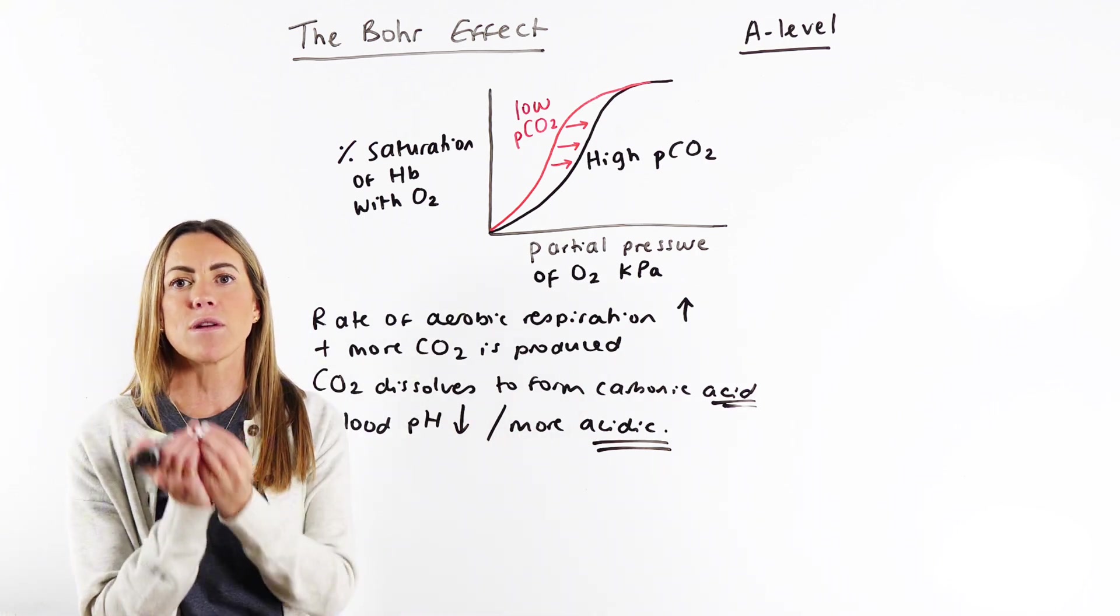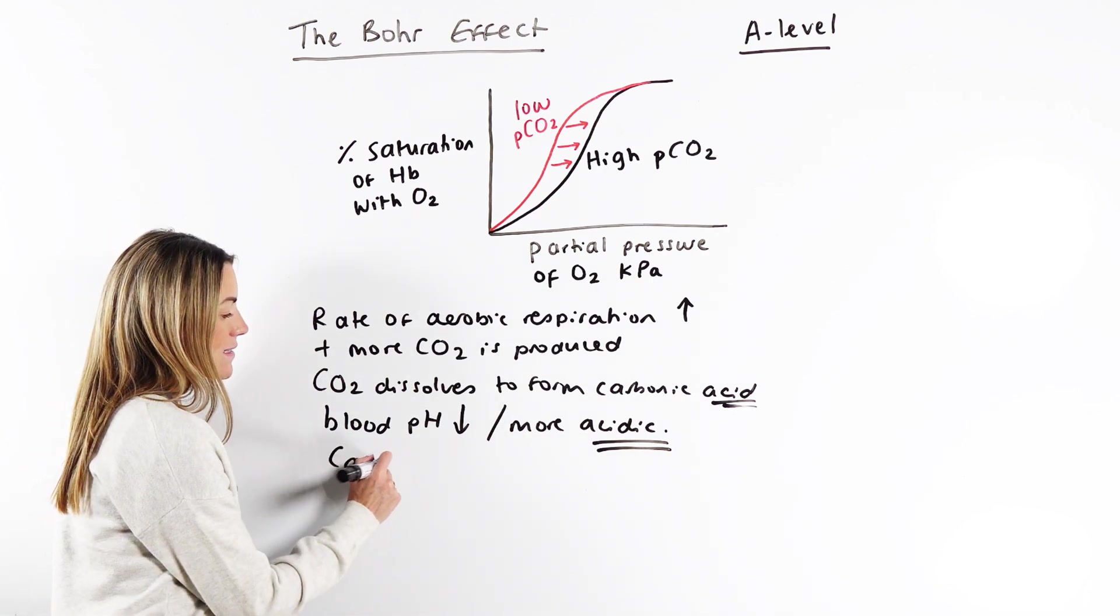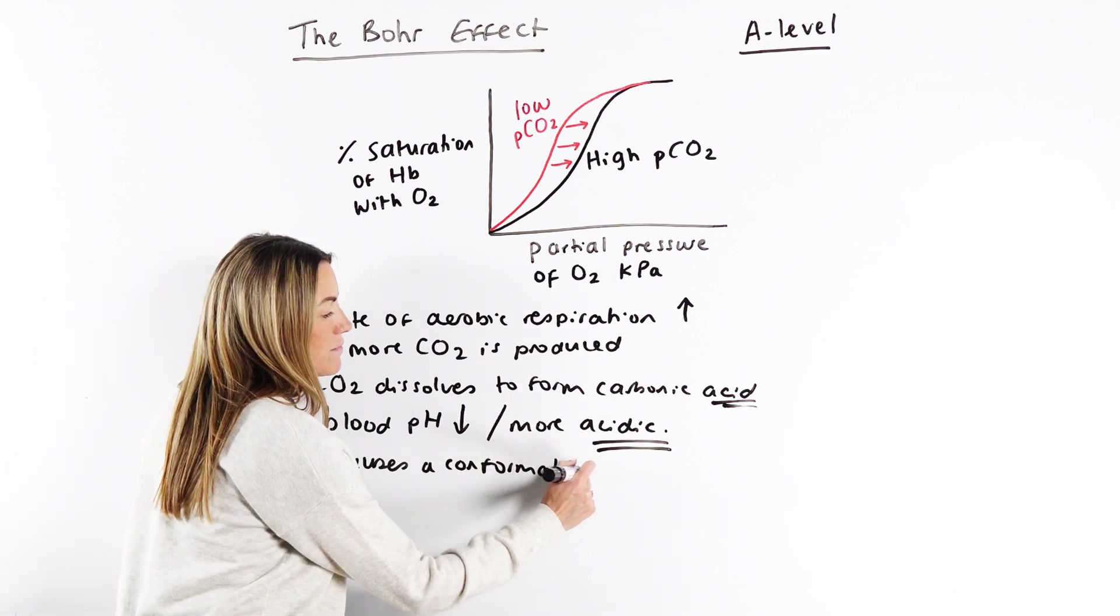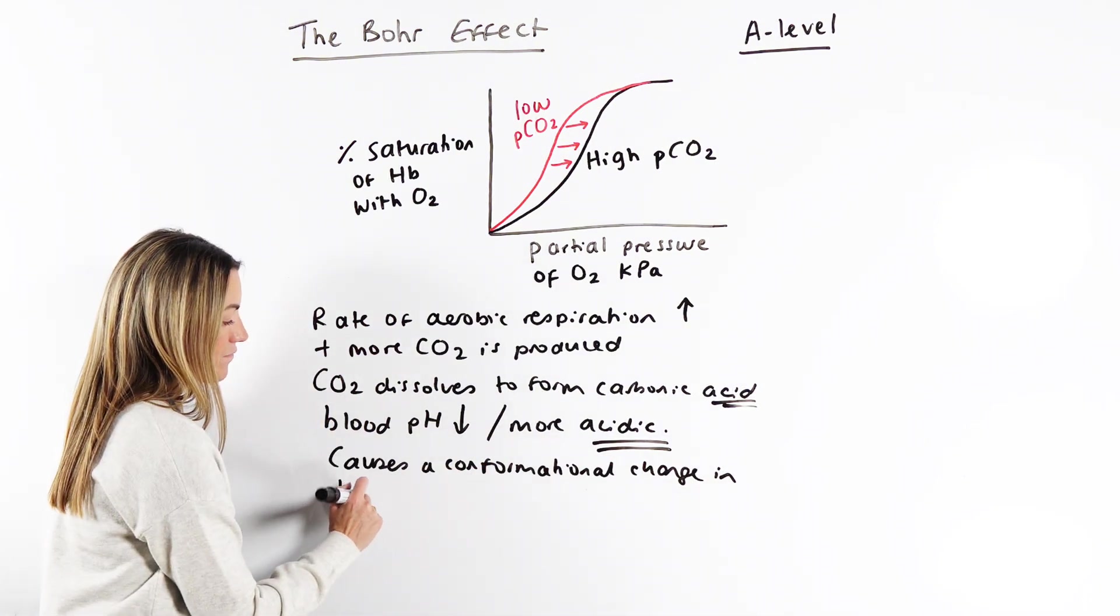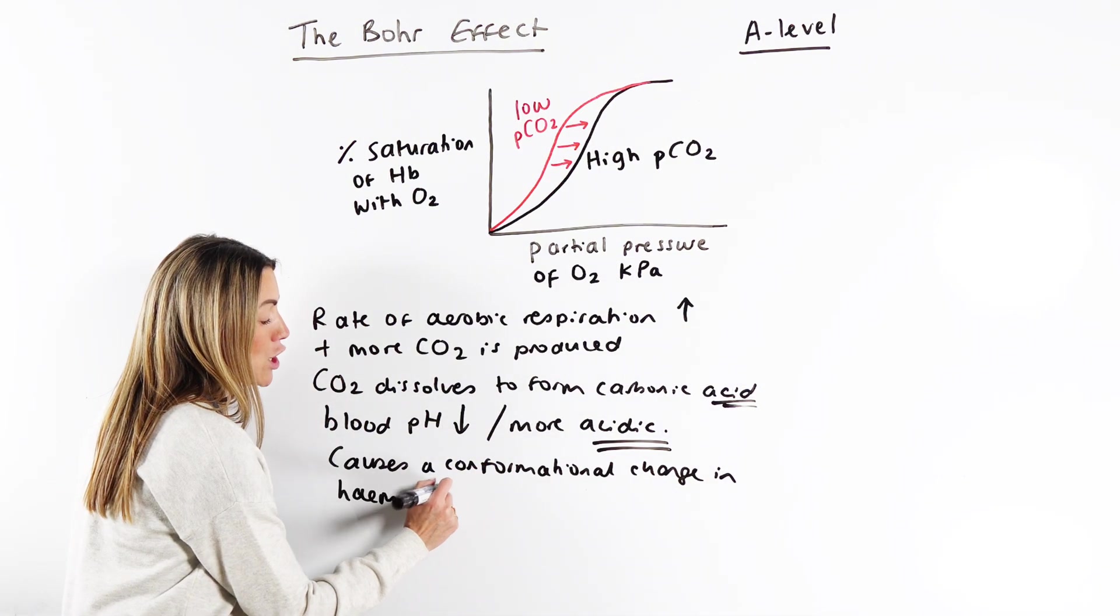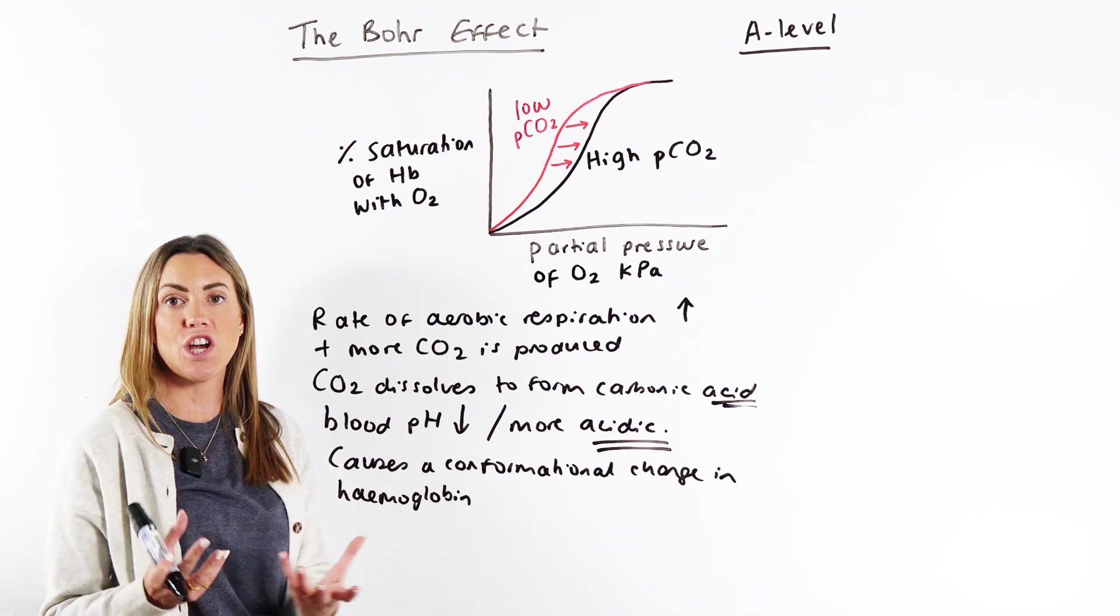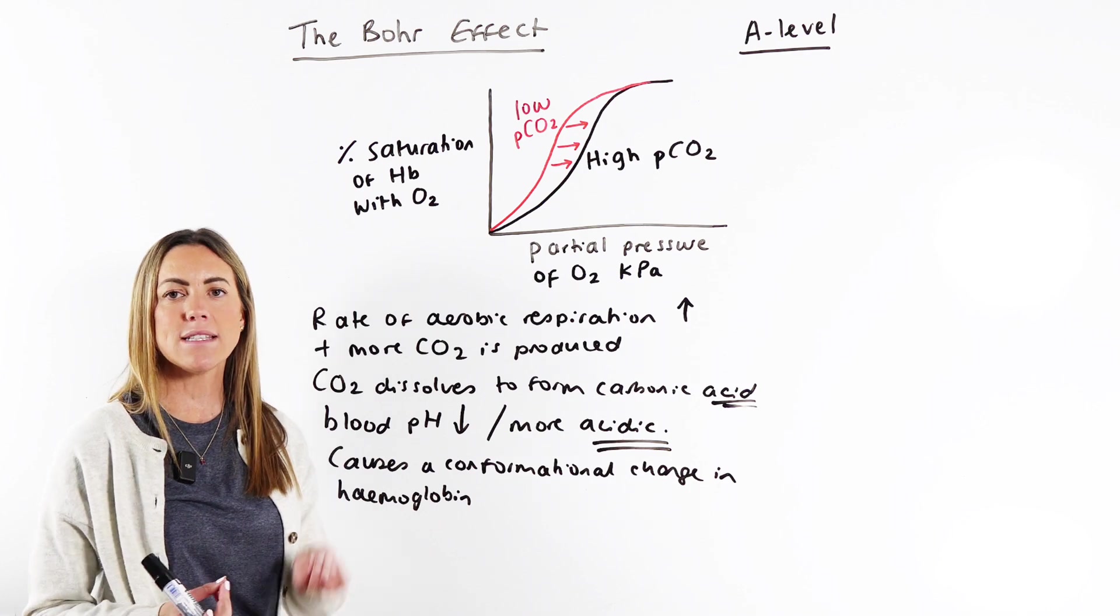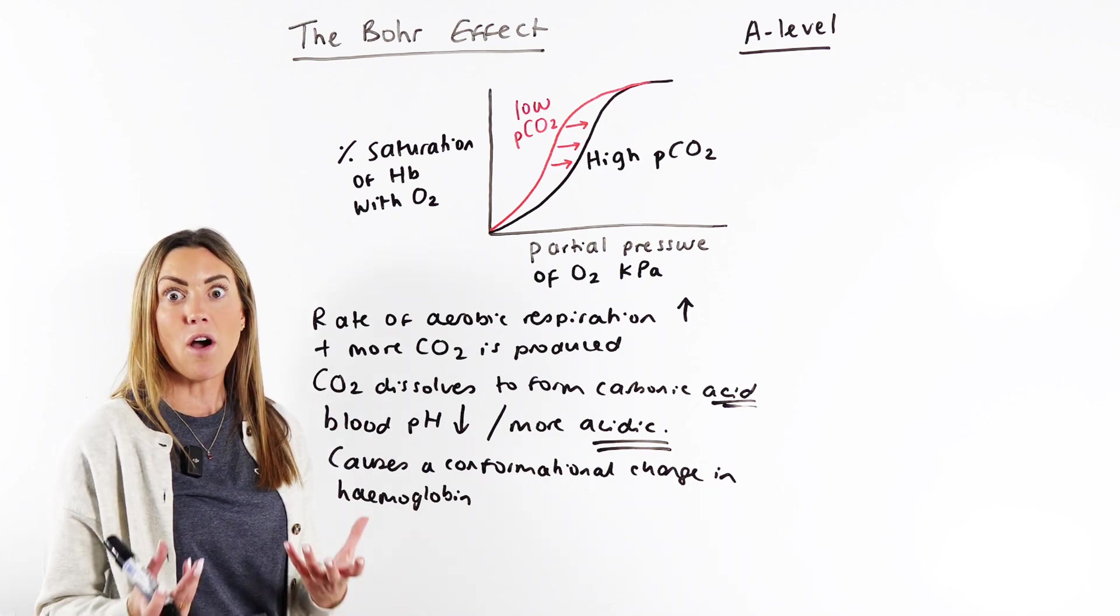This is going to affect hemoglobin structure. It causes a conformational change in hemoglobin. Remember, hemoglobin is a protein. It has a specific tertiary structure. It also has a quaternary structure because it does consist of four polypeptide chains, each with its own heme group that associates with oxygen.